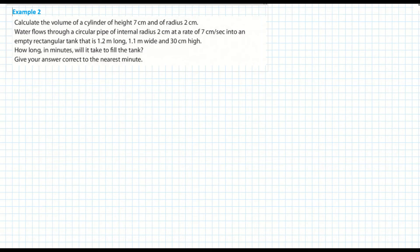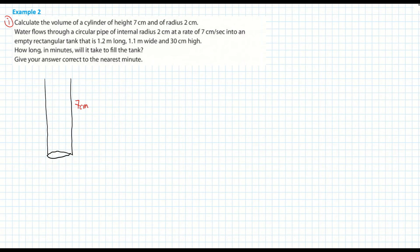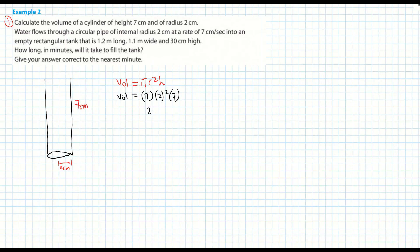For part one, I sketch the pipe: it has a height of 7 centimetres and a radius of 2 centimetres — no halving needed since we're given the radius. Volume equals pi r squared h, so volume equals pi multiplied by 2 squared multiplied by 7, giving 28 pi centimetres cubed. Turning that into a decimal gives approximately 87.96 centimetres cubed.